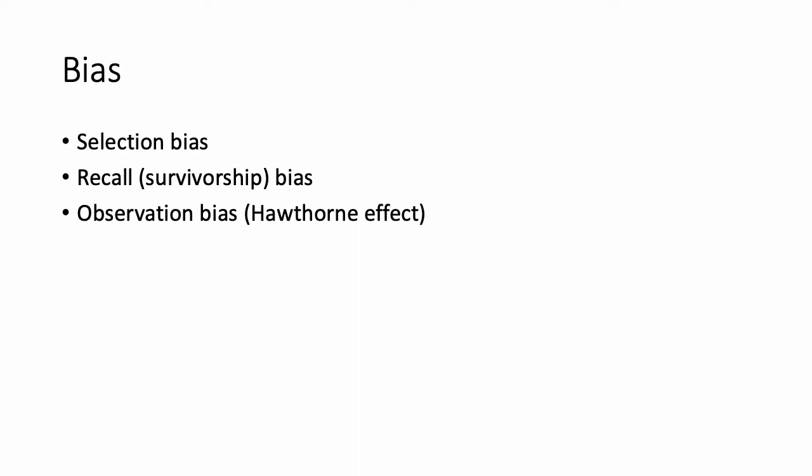Recall bias is when you're studying patients who developed a particular disease and asking them to recall their exposures. Patients who recently developed a disease may be more likely to report certain exposures because they attribute their disease to specific causes. For example, asking women whose children are diagnosed with neurodevelopmental delay about medications taken during pregnancy — they may report anything they took, and you may then incorrectly attribute an outcome to something like Tylenol.